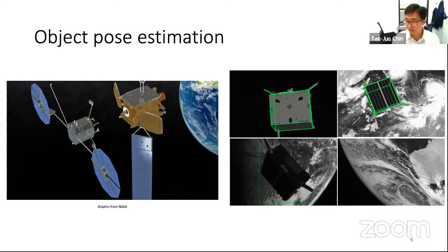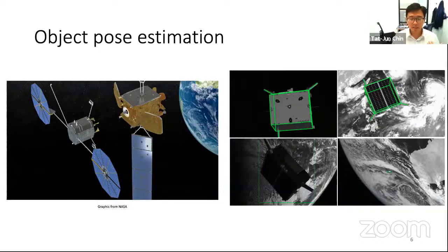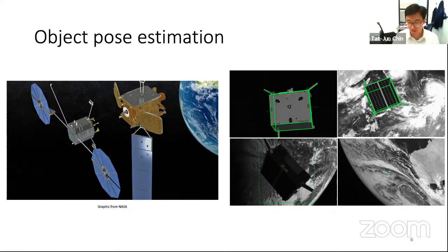Starting with some background: given the title and remit of my current position, I need to introduce a space context. There are certain operations in space or with satellites where we need to estimate the pose of a target object — for example, a satellite attempting to dock with another satellite, or a satellite attempting to grab a piece of space debris using a robotic manipulator. This is a classical computer vision problem, more precisely called visual servoing. Given an image, we're supposed to predict the pose of the object — that is, the position and orientation of the object with respect to the observing camera.